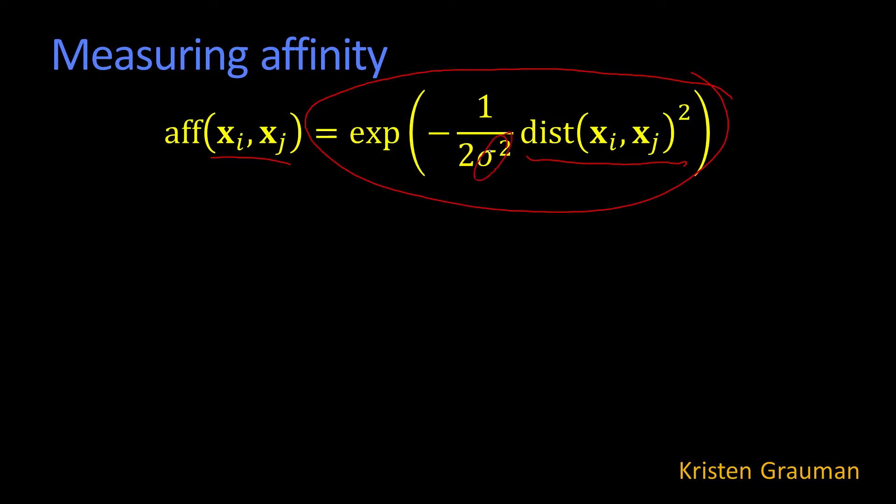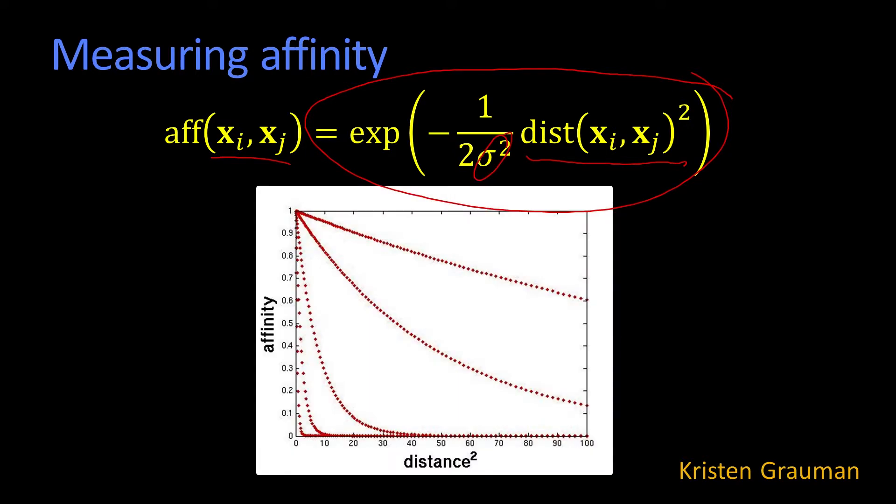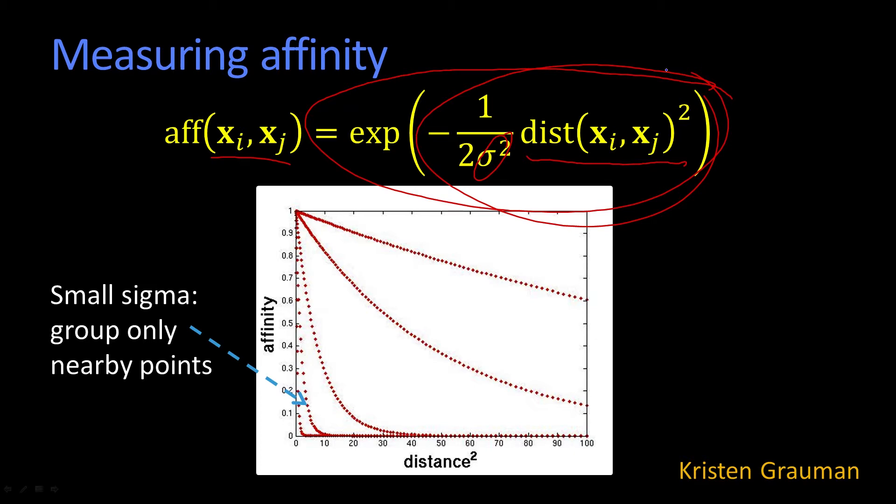So of course, there is a parameter here. And here you can see the change in affinity depending upon what that parameter is, you get these different curves. And essentially, if you use a very small sigma, this thing grows quickly. So in which case, only nearby pixels get any reasonable affinity at all.